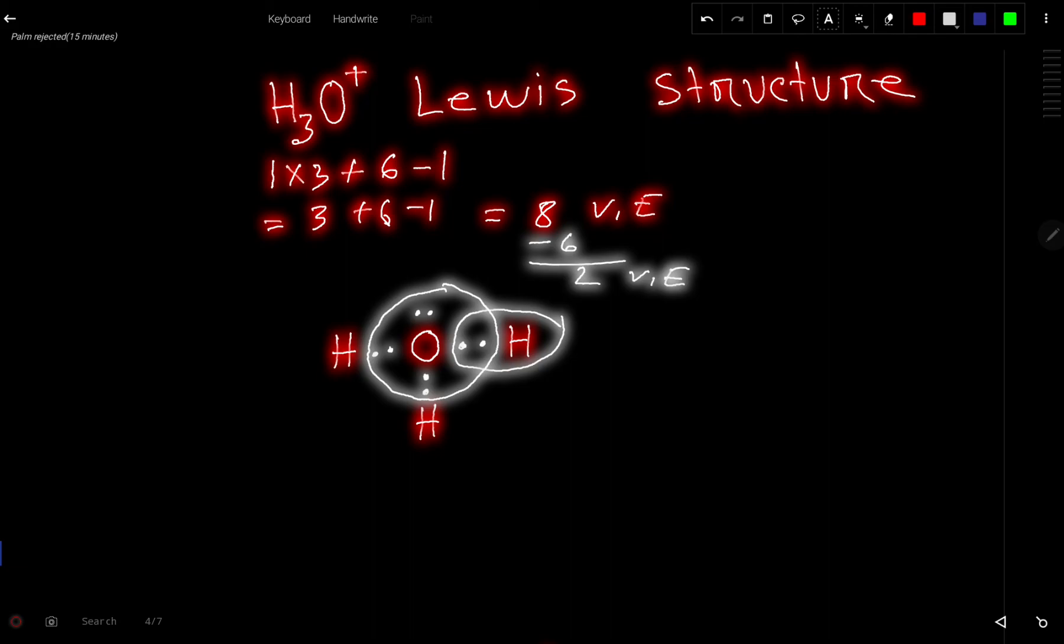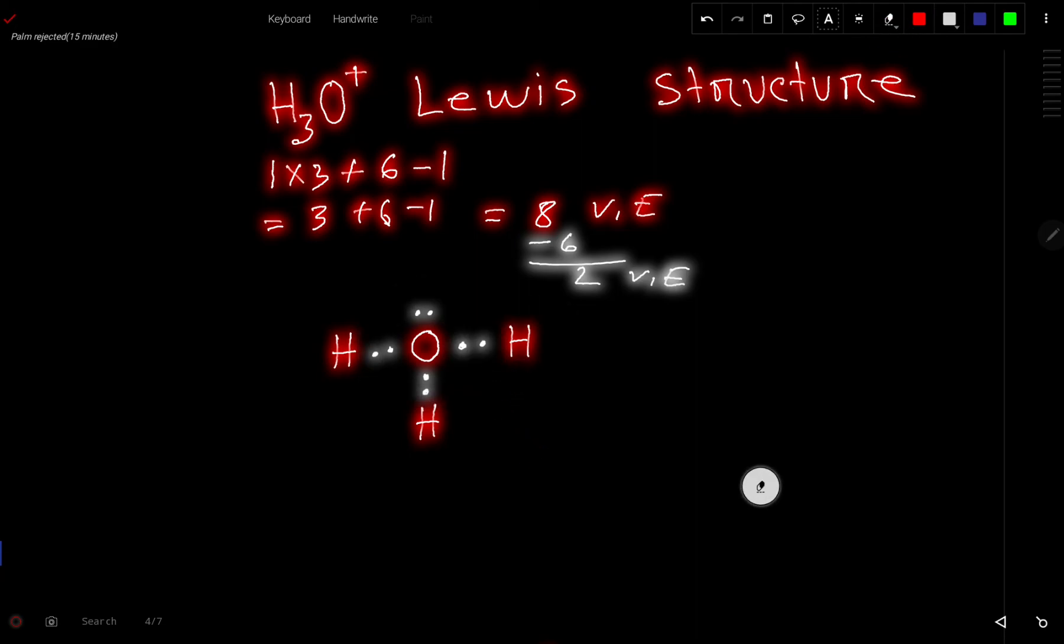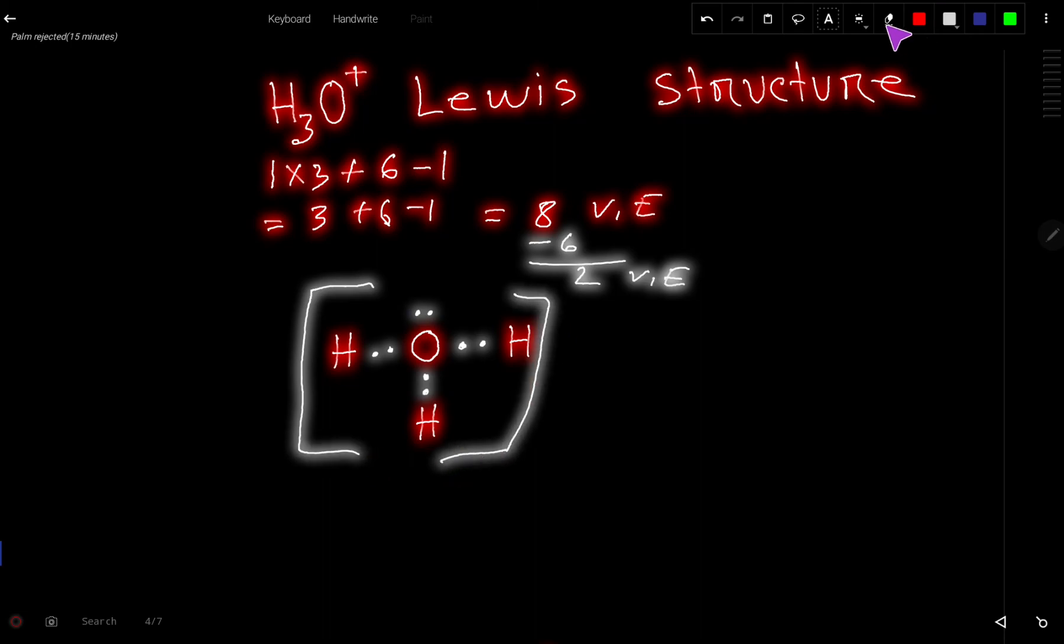And to indicate that it is an ion, you have to use a bracket. Look here, I am using a bracket, and you have to put the charge here. So to indicate that this is an ion, you have to put a bracket and charge. So this is the Lewis structure of H3O plus or hydronium ion. Thank you for viewing this video.